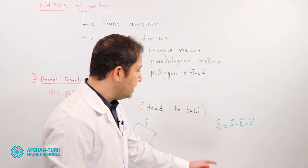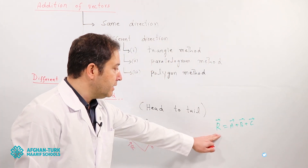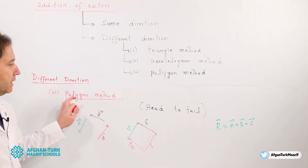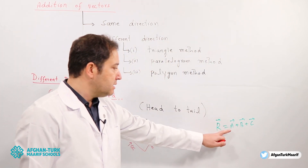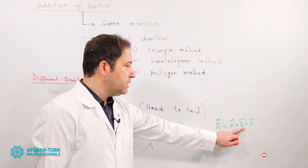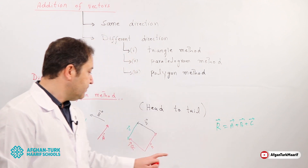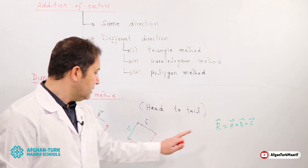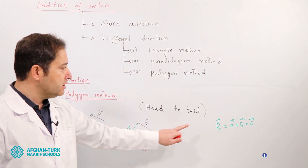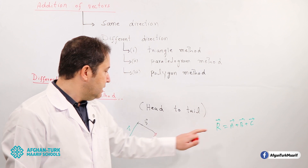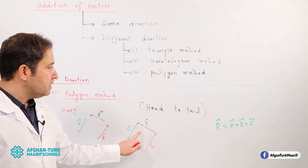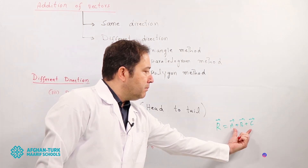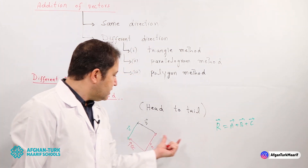The resultant vector using the polygon method is A plus B plus C. This is vector A, this is vector B, and this is vector C. When we combine these three vectors, the result is the resultant vector.